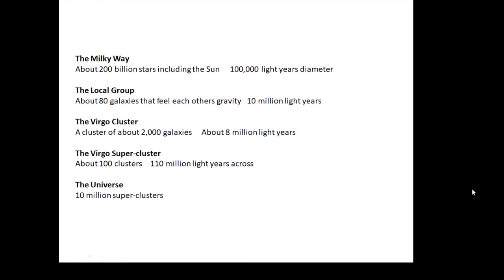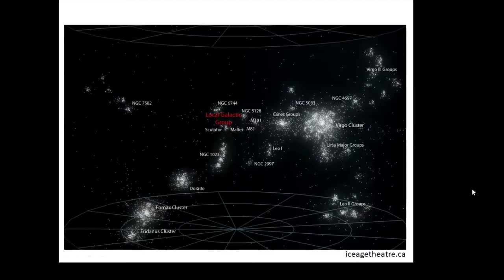Above the cluster level there's the supercluster, which is about 100 clusters. The universe contains about 10 million superclusters — so this is working our way outwards. Here's a picture of the Virgo supercluster; see if you can find the Virgo cluster within it.